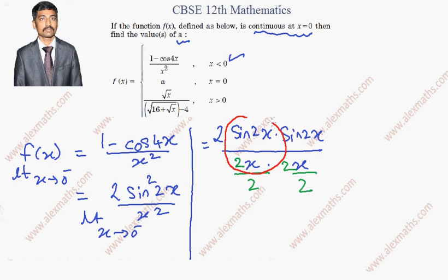So that this entire term is 1. It is in the form of sine theta by theta when limit theta tending to 0, so this entire term is 1. After that, the remaining term is 2 times these two will come up, so totally it is 8.